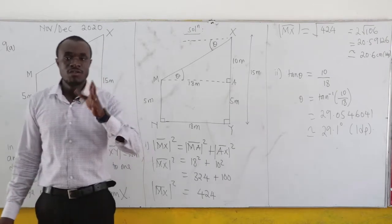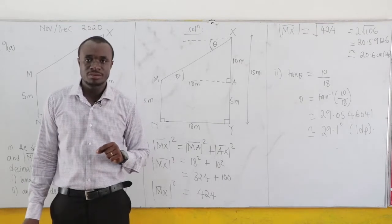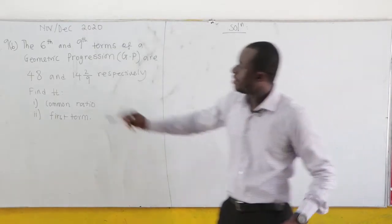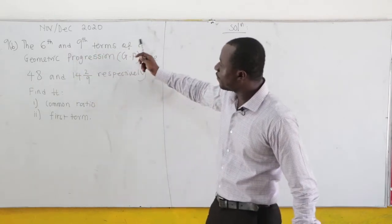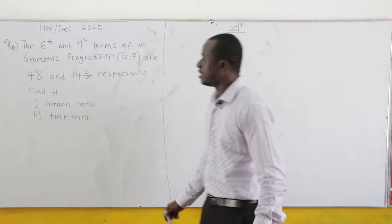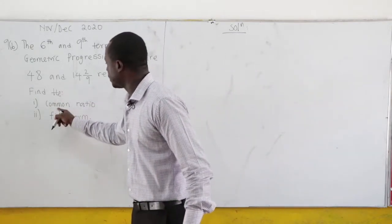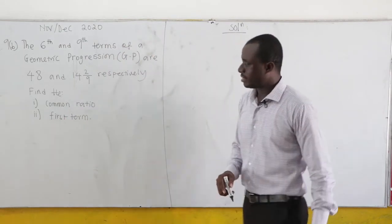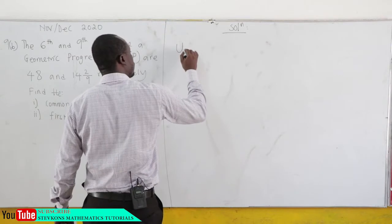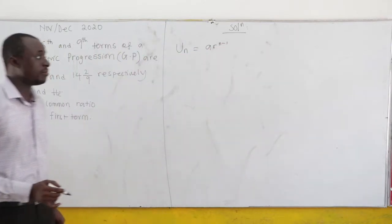If you've not subscribed, please make sure that you do — we have a whole lot of videos to help you pass your exams. Now, question number 9b. The 6th and 9th terms of a geometric progression (GP) are 48 and 142 over 9 respectively. Find: first, the common ratio, and second, the first term. The general term of a GP is given by AR to the power of N minus 1.